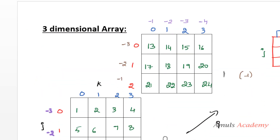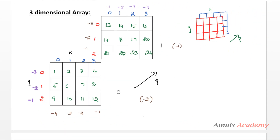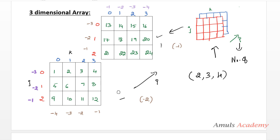Next let's talk about the three-dimensional array. Indexing in a three-dimensional array is a bit more complex. A 3D array uses three indices: i, j, k. It is essentially a 2D array within an array, where i is the number of 2D arrays, j is the row, and k is the column. For example, if the shape is (2, 3, 4), there are 2 two-dimensional arrays, each with 3 rows and 4 columns.